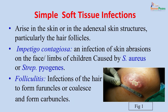Simple soft tissue infections arise in the skin or in the adnexal skin structures, particularly in the hair follicles. Impetigo contagiosa, an infection of skin abrasions on the face and limbs of children, is usually caused by Staphylococcus aureus or Streptococcus pyogenes. The picture shows an infection on a graze of the knee infected by Staphylococcus aureus — this is a picture of impetigo contagiosa. Folliculitis is an infection of the hair follicle that may extend to form furuncles or coalesce to form carbuncles.